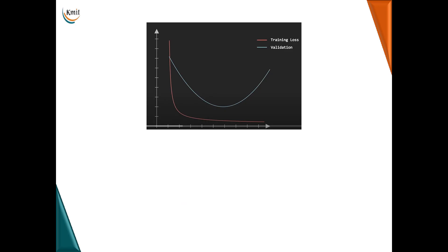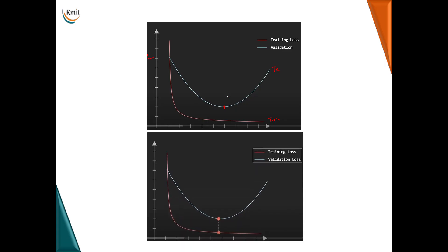In early stopping, we stop the training as soon as our deep learning model starts overfitting. As shown in the graph, the x-axis has epochs and the y-axis has loss. The training loss decreases with every iteration, and you might think the model is still learning. However, the testing or validation curve shows the model's performance on unseen data, and you can see that until the sixth epoch it was reducing, but after the sixth epoch it started increasing.